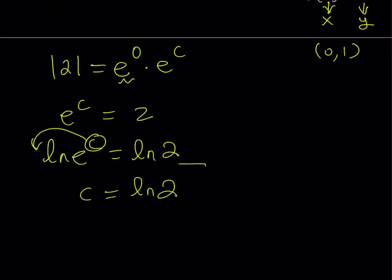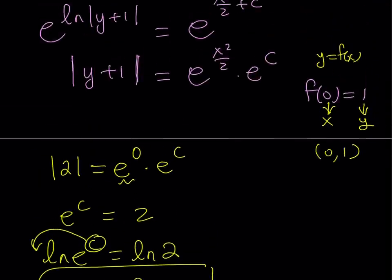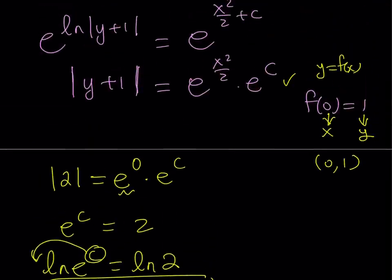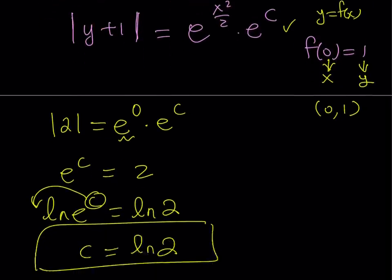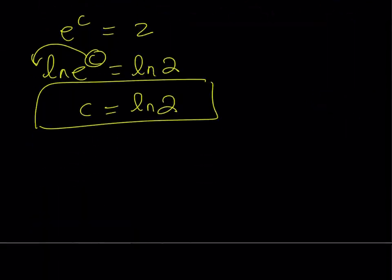And this gives you c equals ln 2. Now, I can go ahead and back substitute this into my expression here and then get the values from there. But we're going to do a little bit more work on that one once we replace the c with what it is. Let's go ahead and rewrite that.